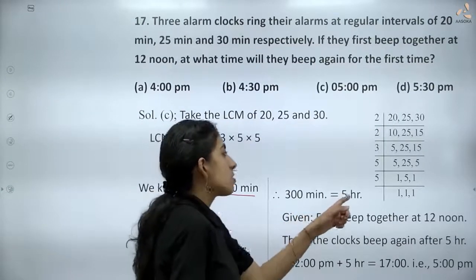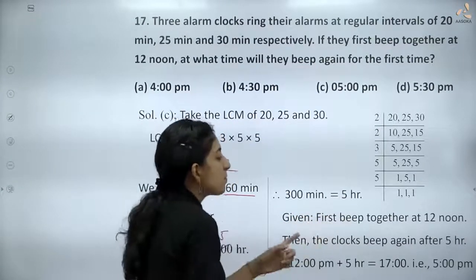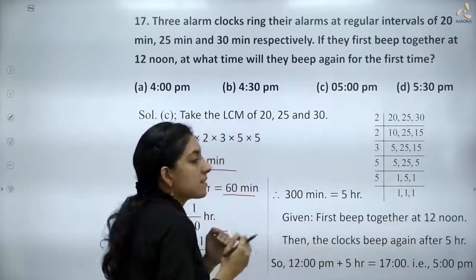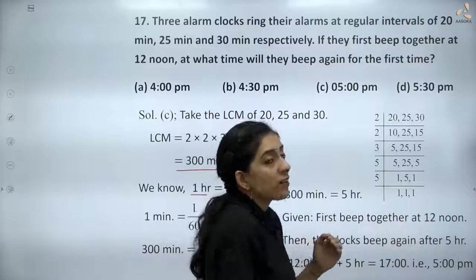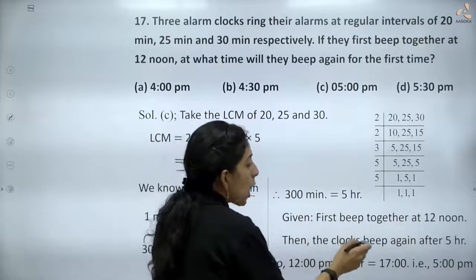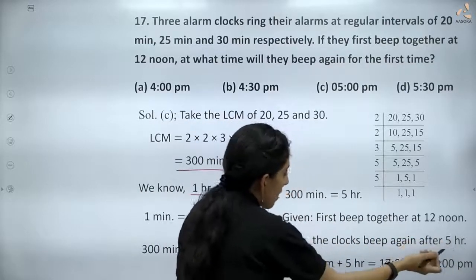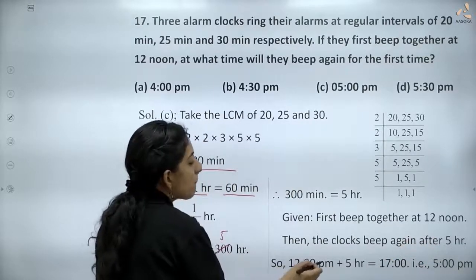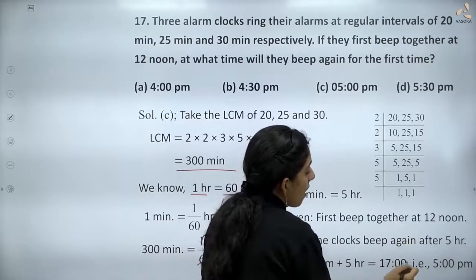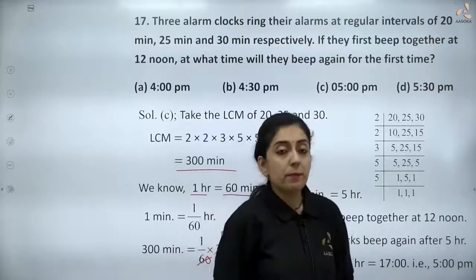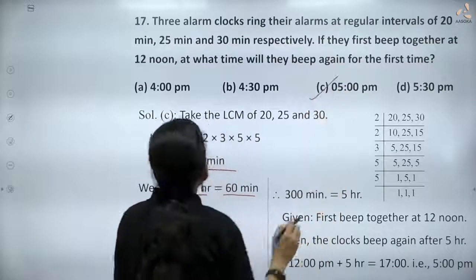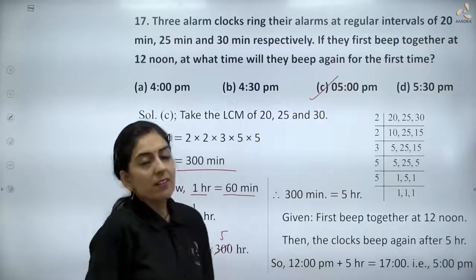First beep together at 12 noon. 12 noon के 5 घंटे बाद they will beep together again. The clocks beep again after 5 hours. 12 pm + 5 hours = 17:00, that is 5:00 pm. Hence, option C is the correct answer. Thank you.